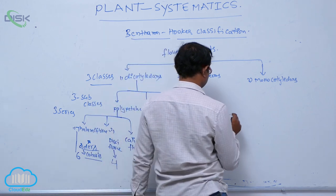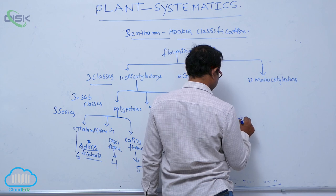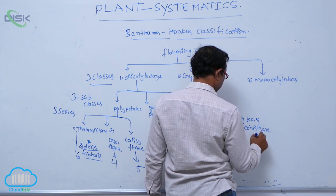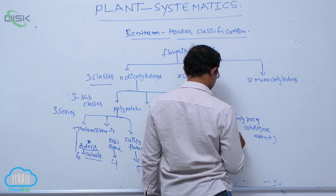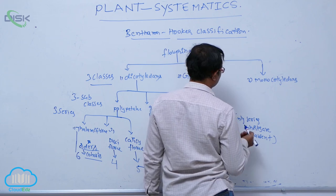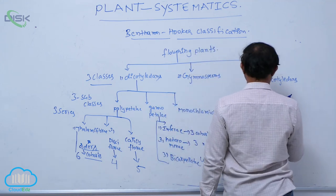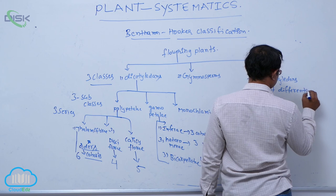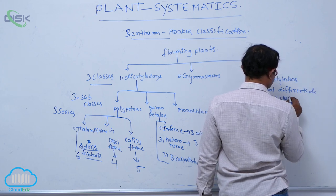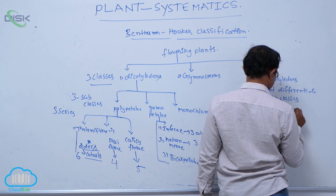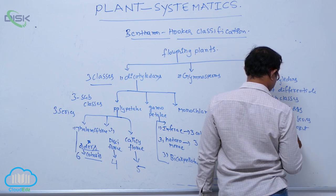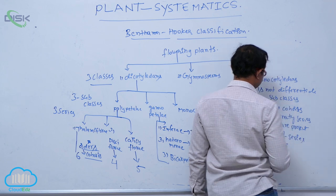Monochlamidae has only a single perianth — series and cohorts are absent, and eight series are present. After that, Monocotyledons does not differentiate into subclasses and cohorts. Directly, seven series are present.